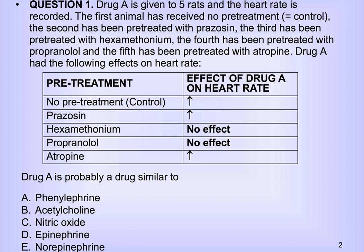If you're a medical student that's wasted a lot of time on questions like this, hopefully this diagram I'm about to show you can help you save some time on the exam. These types of questions involve some sort of control drug that they want you to figure out what the mechanism is, and they'll give you arrows indicating its effect on either heart rate or blood pressure, and then you have to figure out what this magic drug does.